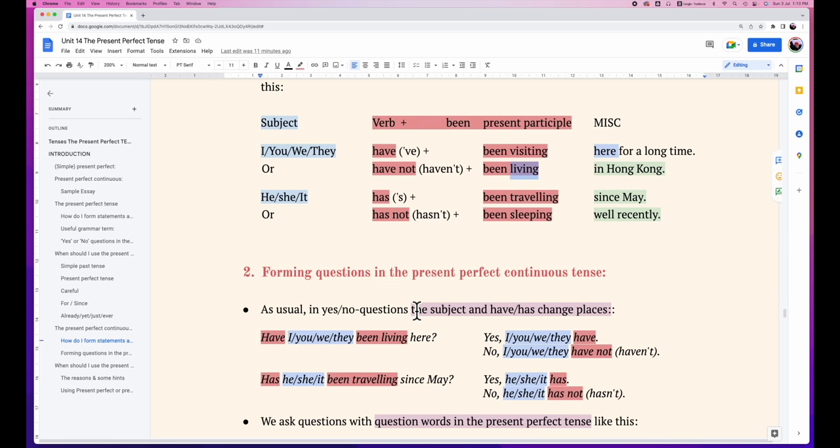Now for the other subjects - he, she, it - these pronouns will use another kind of verb: has, or has not negative. And the second part and the third part will be similar - the past participle of verb to be and the present participle of the verb. So he has been traveling since May. She has not been sleeping well recently.